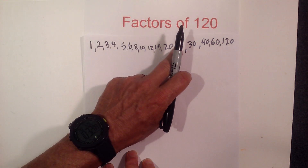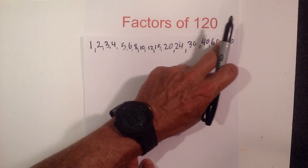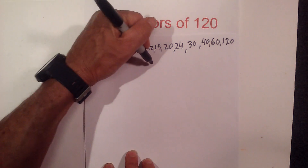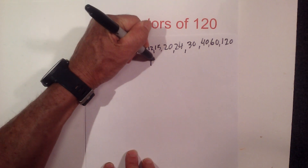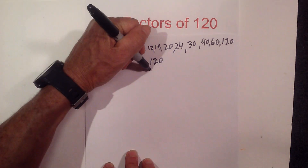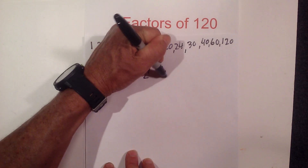So the factors of 120 — there are quite a few: 1, 2, 3, 4, 5, 6, 8, 10, 12, 15, 20, 24, 30, 40, 60, and 120. Now let's complete a factor tree for prime factorization. 2 times 60 equals 120.